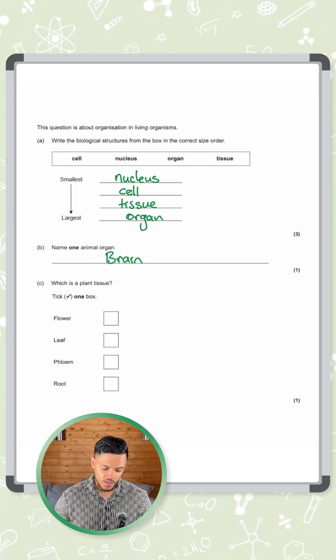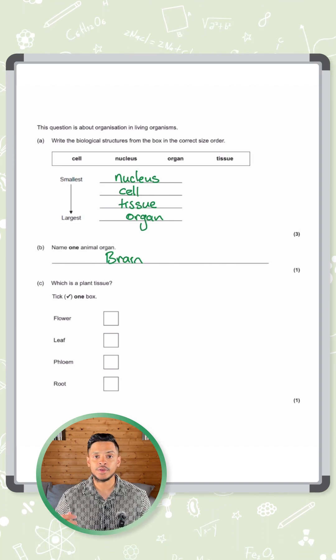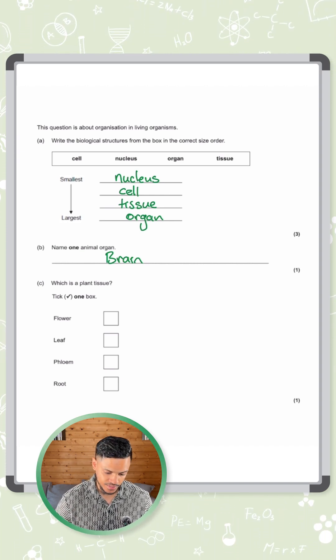And then for part C. What is a plant tissue? Out of the following we've got flower, leaf, phloem and root. We've got quite a few organs here.